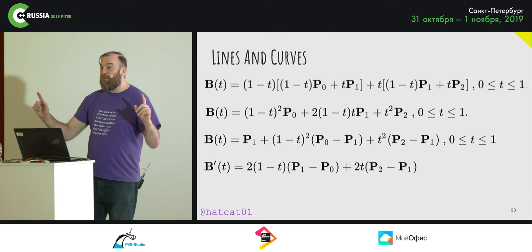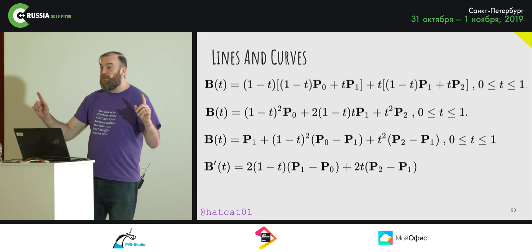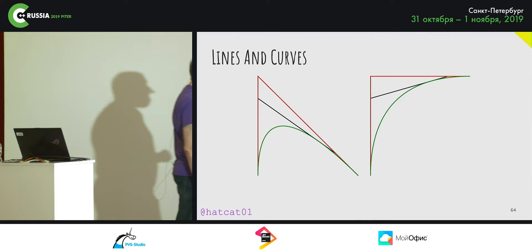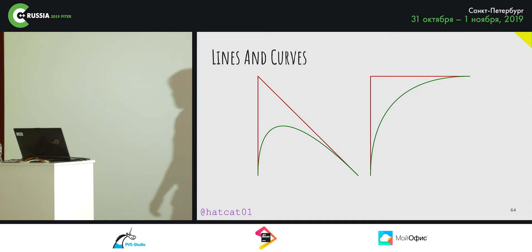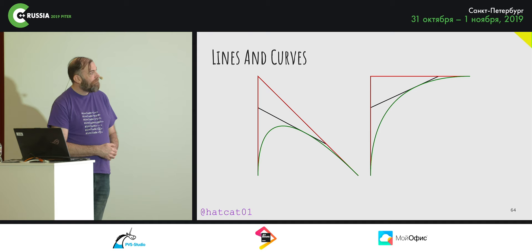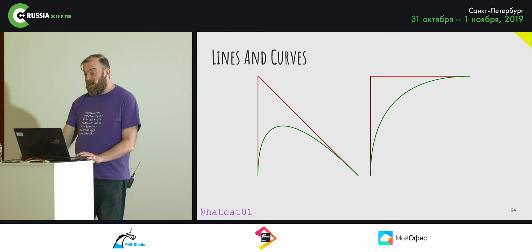This can be written in a way which highlights the symmetry with respect to p₁ — we're traveling from p₀ to p₂ via p₁. Looking at the derivative, we can conclude that the tangents at p₀ and p₂ intersect at p₁. As t increases from 0 to 1, the curve departs from p₀ in the direction of p₁, then bends to arrive at p₂ from the direction of p₁. Armed with this equation and three control points, we can make a curve — here's a curve class.